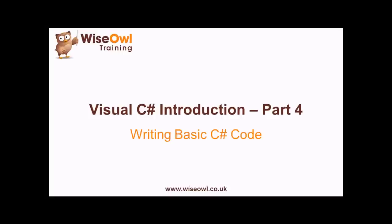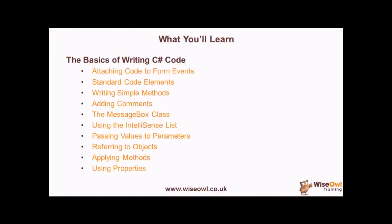Welcome to part 4 of this YSL tutorial series on basic programming in Visual C-Sharp. In this part of the series we're finally going to get into writing some basic C-Sharp code, and we'll begin by explaining how you can get access to the events of a form so that you can attach code to them. We'll talk about a few of the standard code elements, and then we'll get into writing your own simple methods. We'll begin by explaining how to add a comment, and then we'll use the MessageBox class as a simple way to demonstrate how to write basic code.